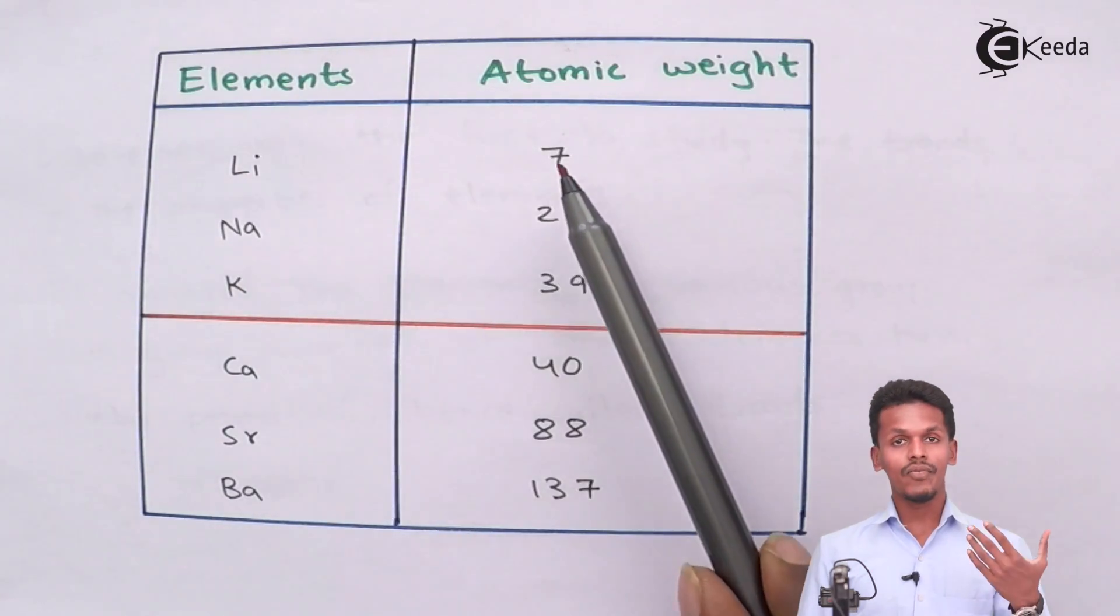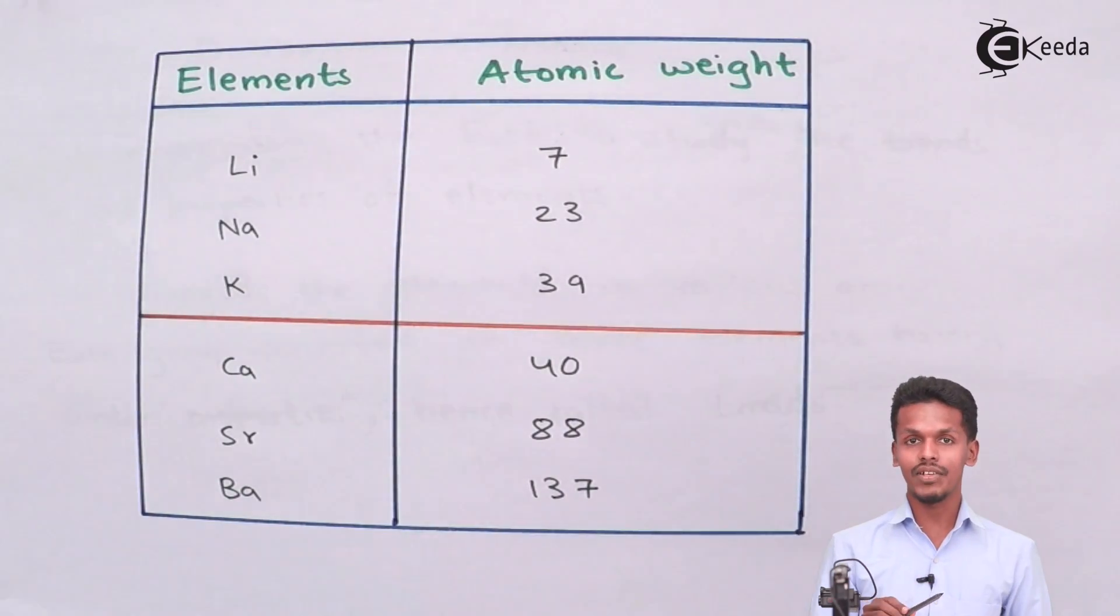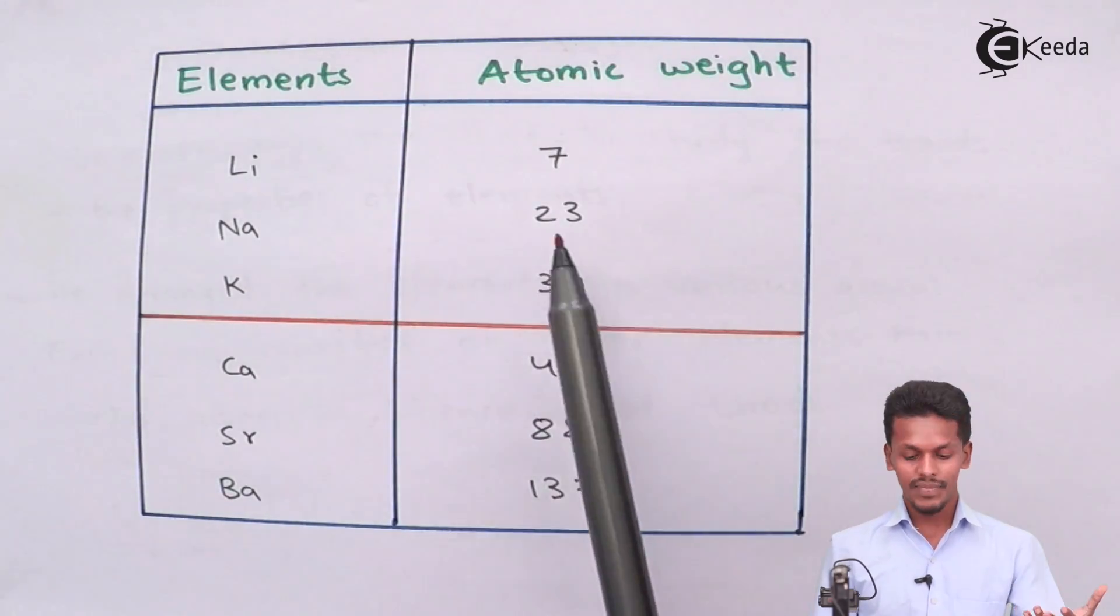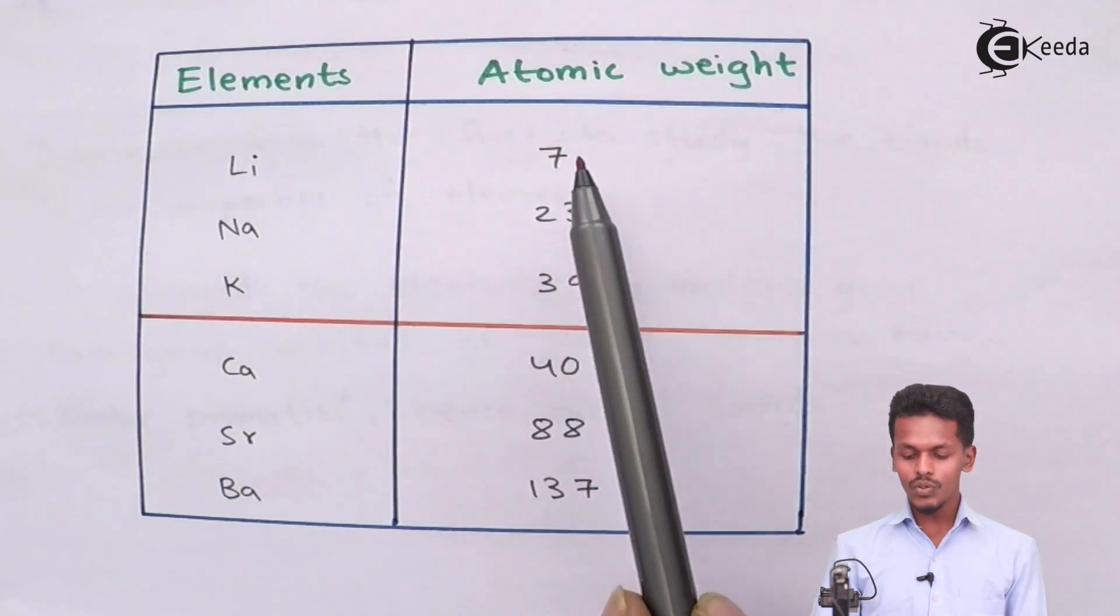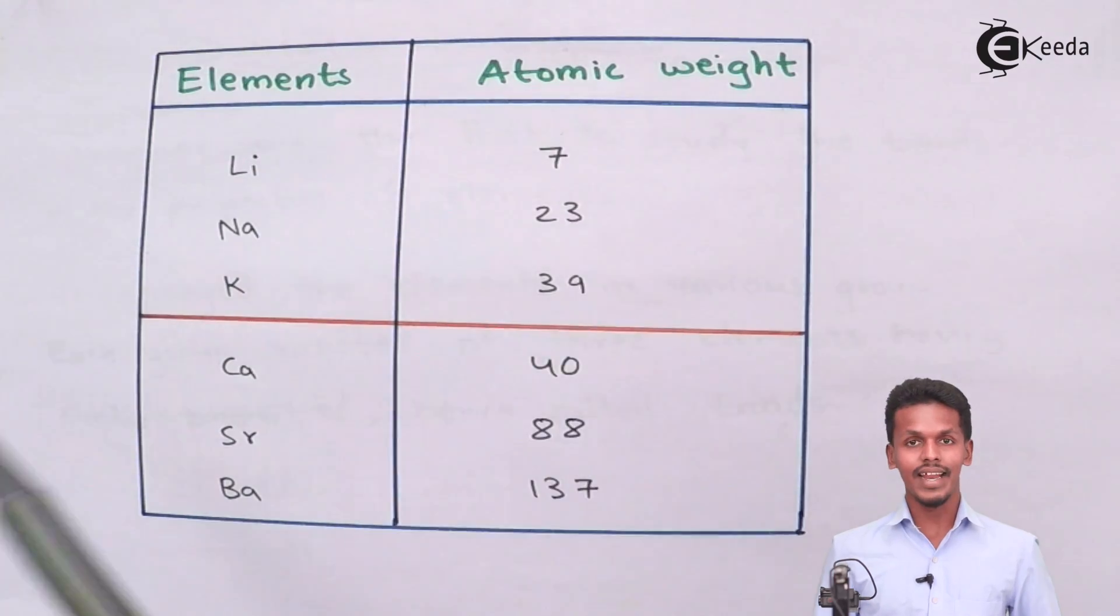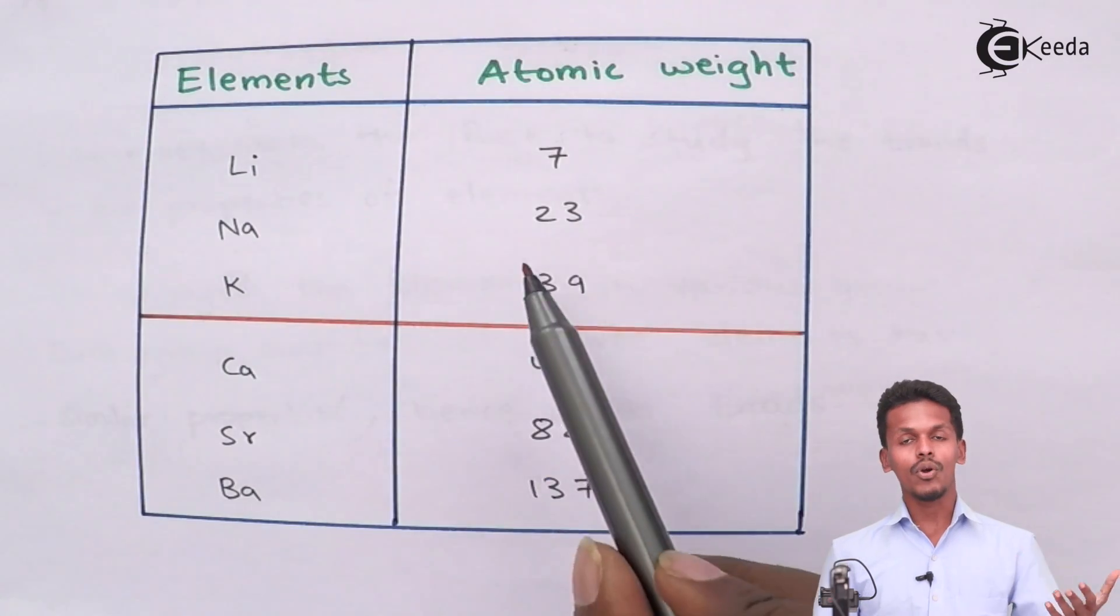If we have added 39 plus 7 and made an average, that is 39 plus 7 divided by 2, then the overall answer would be almost equal to that of the middle element, that is sodium. So if we do the average of 7 and 39, let us see what we get. We have got 23.